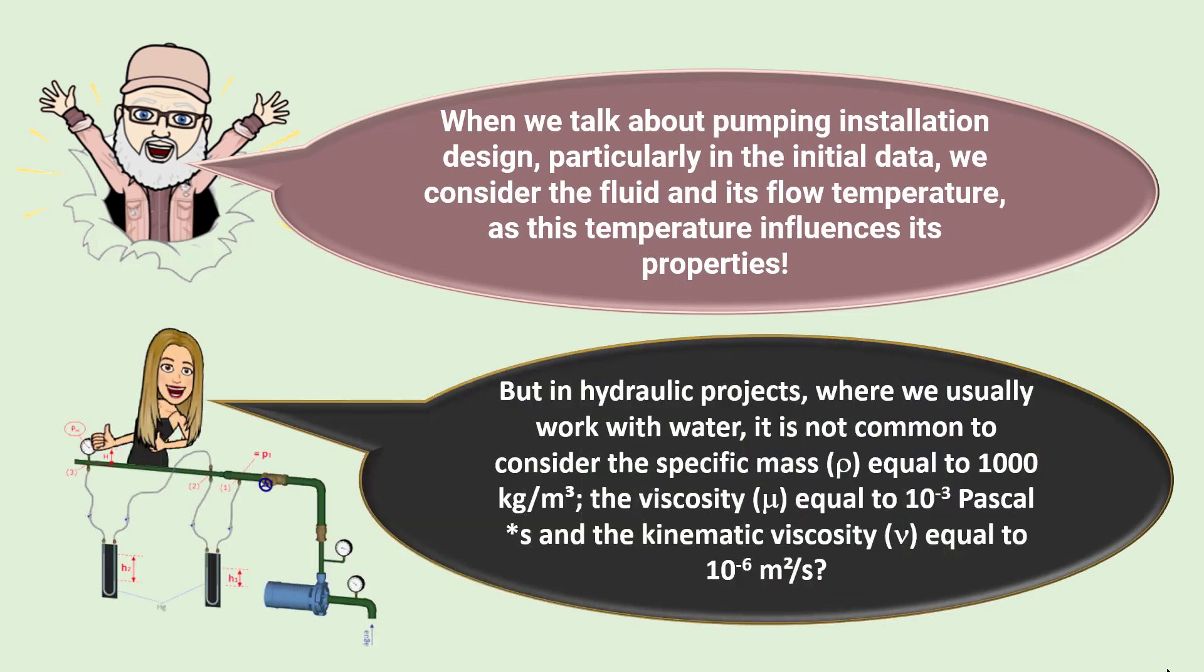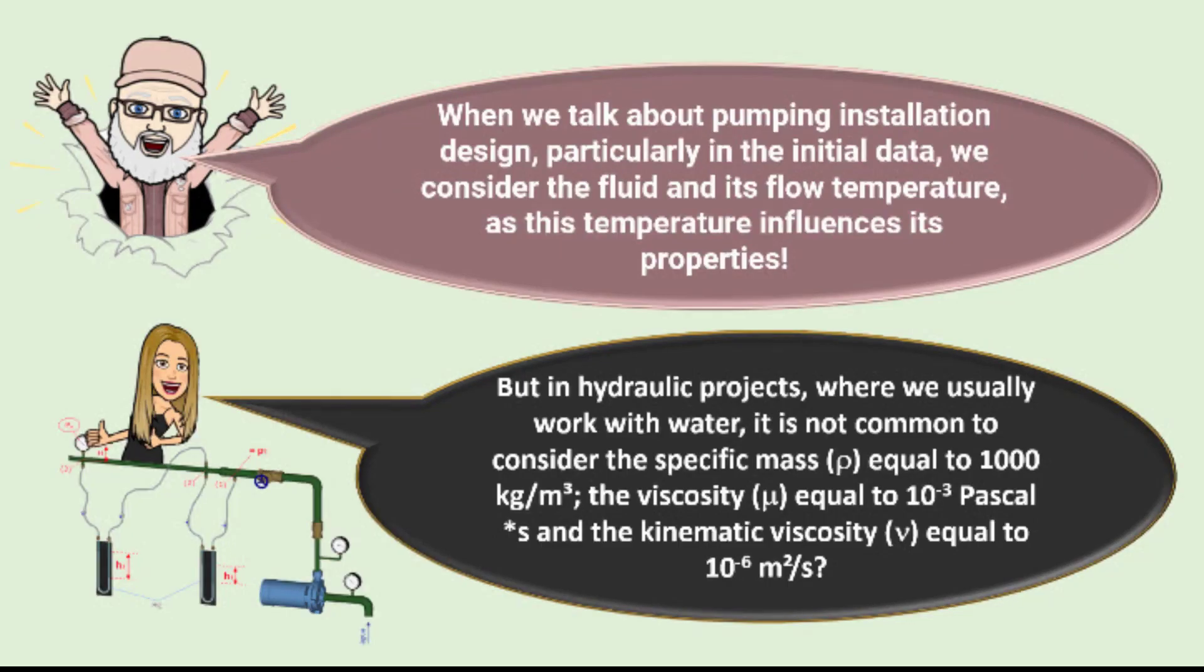But in hydraulic projects where we usually work with water, it is not common to consider the specific mass Rho equal to 1000 kilograms per cubic meter, the viscosity Mi equal to 10 to the minus 3 pascal times a second, and the kinematic viscosity Ni equal to 10 to the minus 6 square meters per second.